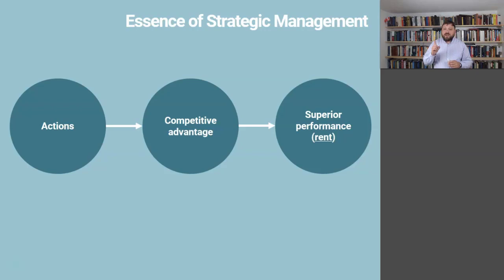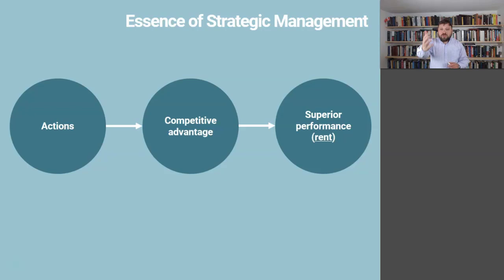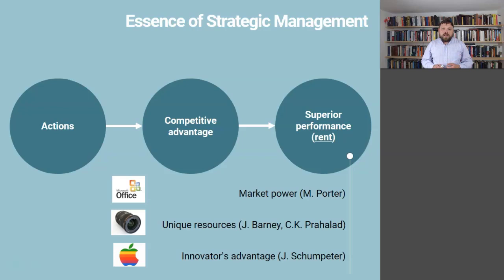If I need to summarize the whole field of strategic management in one slide, this would be this one slide. The mantra of strategic management is competitive advantage. It is all about actions — like which industry to compete, which product to introduce, which alliance to form — that lead to competitive advantage. By competitive advantage, we mean the ability to create superior performance, or what in economics we call rents: the ability to command above-average profit.